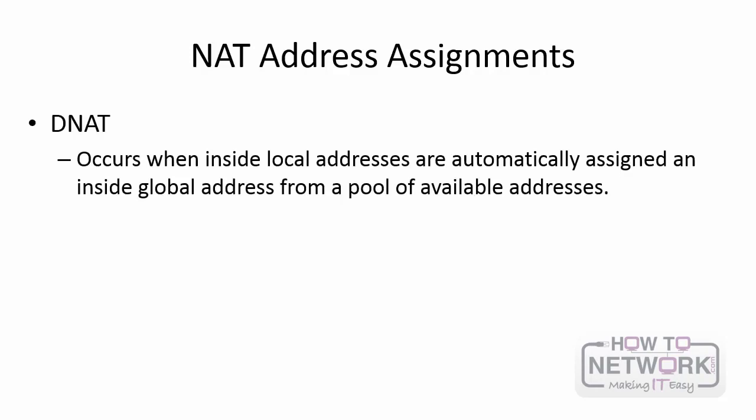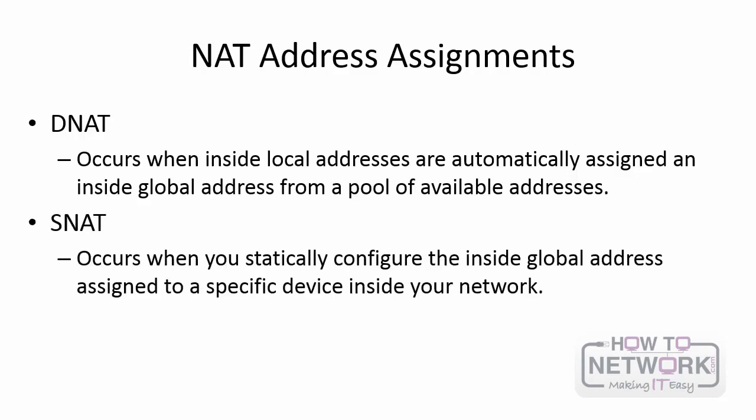There are two approaches to NAT. The first is dynamic NAT, which occurs when an inside local address is automatically assigned to an inside global address from a pool of available addresses. Then there is static NAT, or SNAT, where you statically configure the inside global address for a specific device. For example, if you have an email server inside your company and other internet mail servers need to reach it at a specific IP address, you would use SNAT and specifically assign a global IP address to represent that mail server.